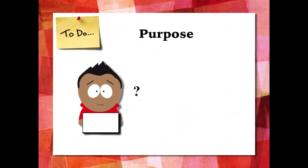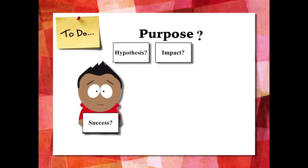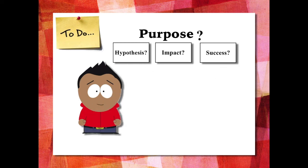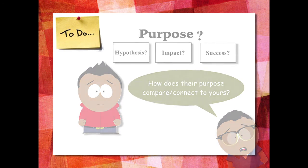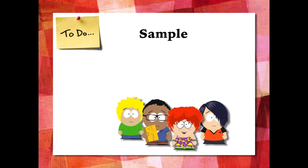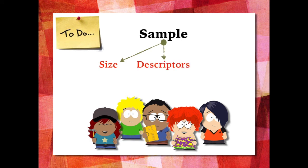Start by looking at the purpose of the study. Another element to consider when evaluating a study for your review is the sample population that the researchers chose. Consider how big or small the sample was. The descriptors can be important too — consider what characteristics were highlighted in the sample population. Look closely at the method of selection. What does that tell you about the overall impact of the study? If the researchers used a truly random selection method or a purposive method, how could that have influenced their findings or the generalizability of their study?